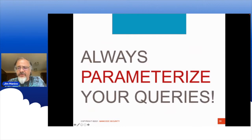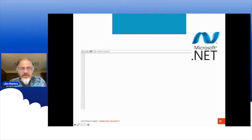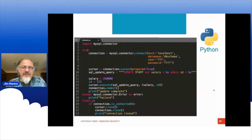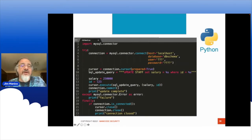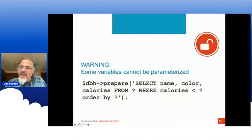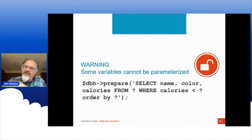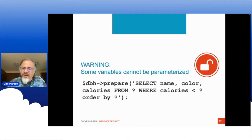Always parametrize your queries. Use a question mark as a placeholder with a binding statement. We have parametrized queries in the Java world, in the .NET world, and in Python. Every once in a while you can't parametrize — like a column name, table name, or a LIKE search — so make sure you have really strict exact-match validation, or validate down to letters and numbers only. Sometimes you can't parametrize, so just be aware.